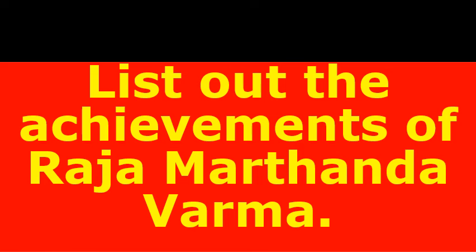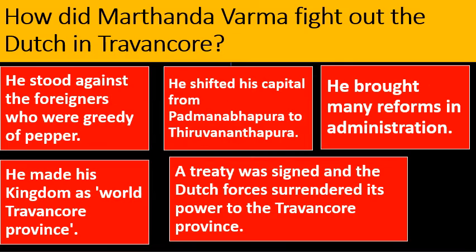Another highlight of the lesson: list out the achievements of Raja Marthanda Verma. This is an important three-mark question. Marthanda Verma stood against foreigners who were greedy for pepper. He shifted his capital from Padmanabhapura to Thiruvananthapuram. He brought many reforms in administration and made his kingdom the Travancore province. The Treaty of Mavelikkara was signed and the Dutch forces surrendered their power to Travancore.